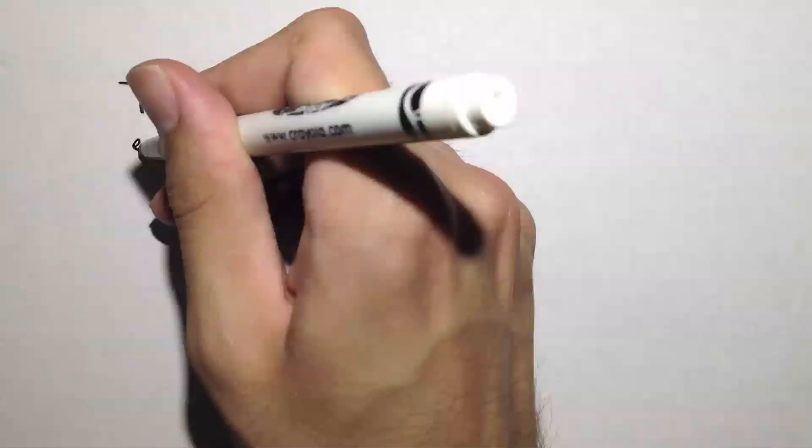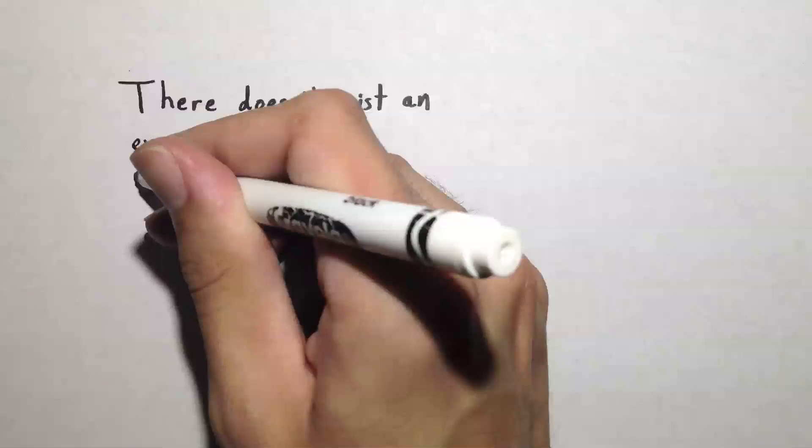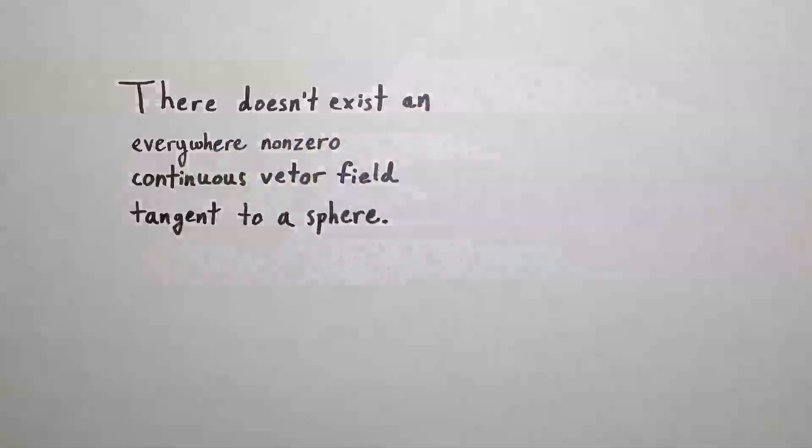Tangent to a sphere means that the vectors are on a sphere pointing along the surface, as opposed to into or out of the sphere.